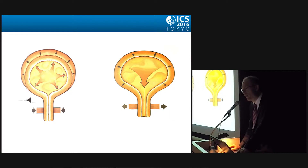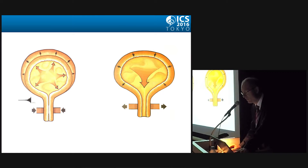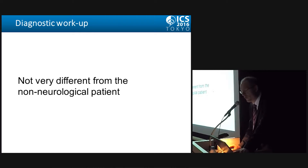The patient with underlying neurological disease will present with symptoms of the storage phase, symptoms of the voiding phase, or a combination of symptoms of the storage and voiding phase. The diagnostic workup in the neuro-urological patient is in principle not very different from the non-neurological patient.